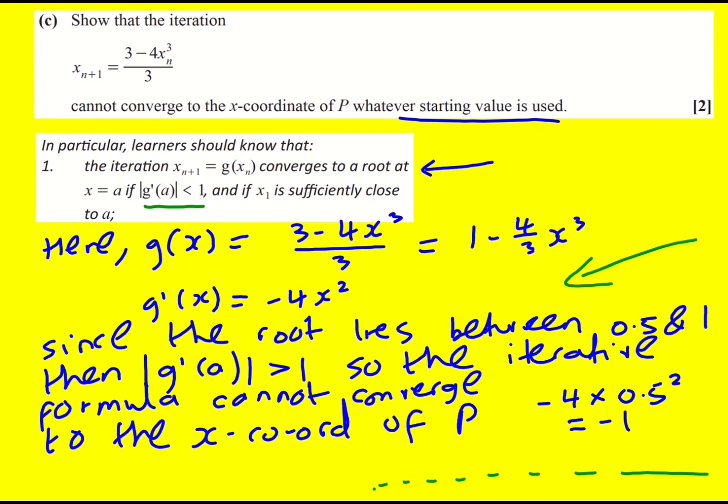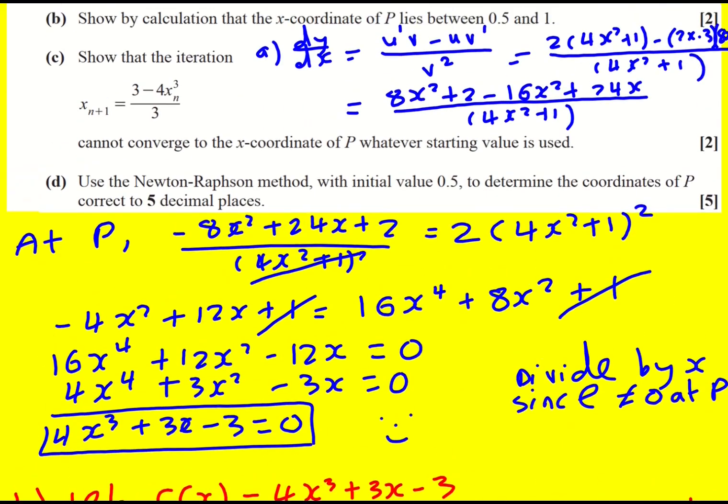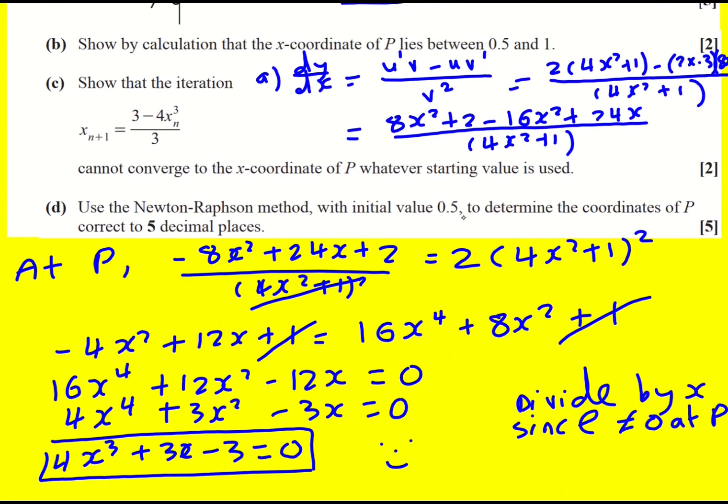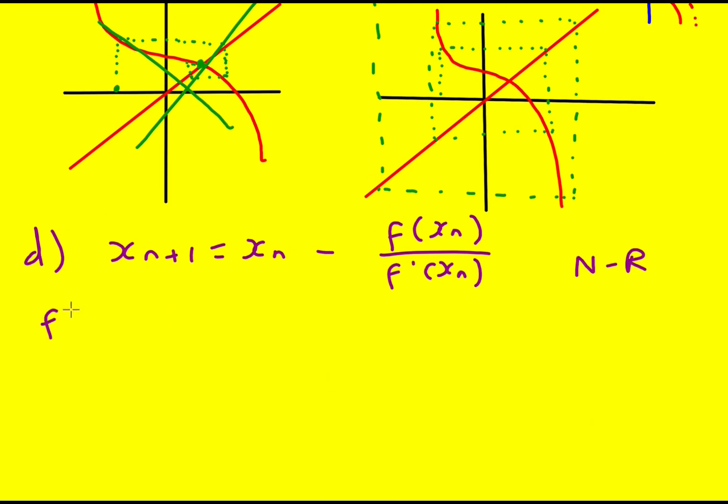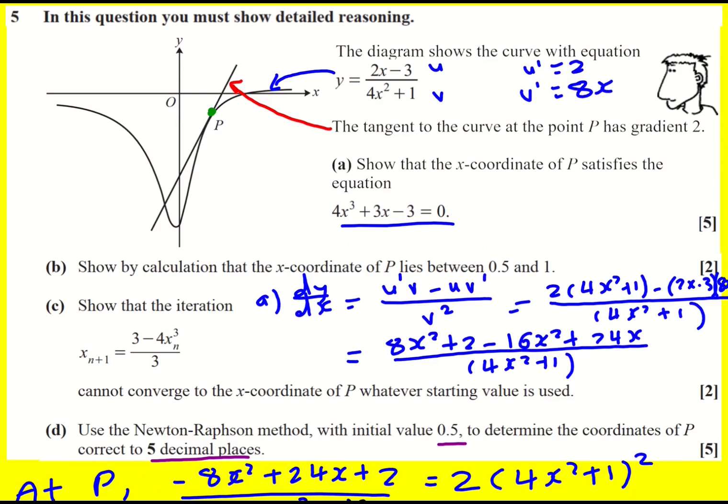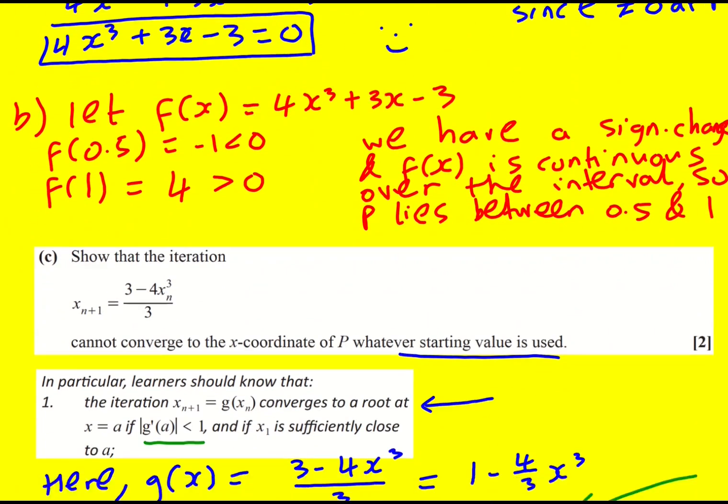One last bit of this question. Instead of using fixed-point iteration, we're going to use the Newton-Raphson method with initial value 0.5, because we know that's close to the root, to determine the coordinates of P correct to five decimal places. So this is given in the formula book, xn plus 1 is xn minus f of xn divided by f dash of xn. Newton-Raphson. This uses a different approach to finding a root. In fact, it uses tangents. I explain it in other videos, so I'm not going to talk about it here. So remember, we're trying to find the root of this equation here, 4x cubed plus 3x minus 3.